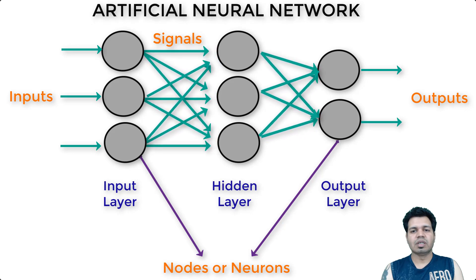In the first layer, which is the input layer, these circles are referred to as nodes or neurons. You can see that each of the input nodes is connected to other nodes in the middle layer called the hidden layer. Signals are essentially getting transmitted from the input layer to the hidden layer.